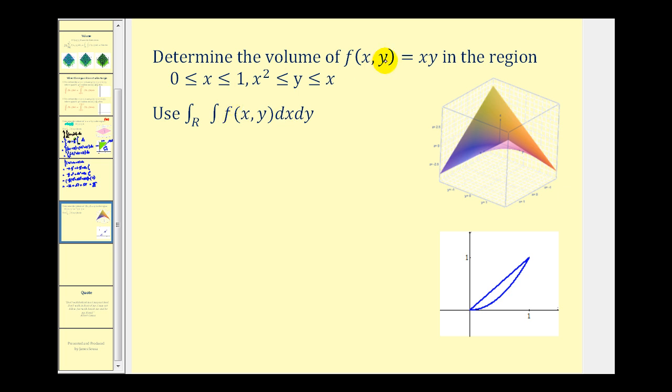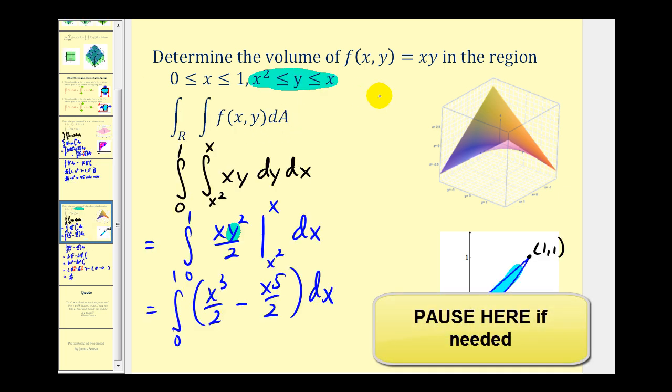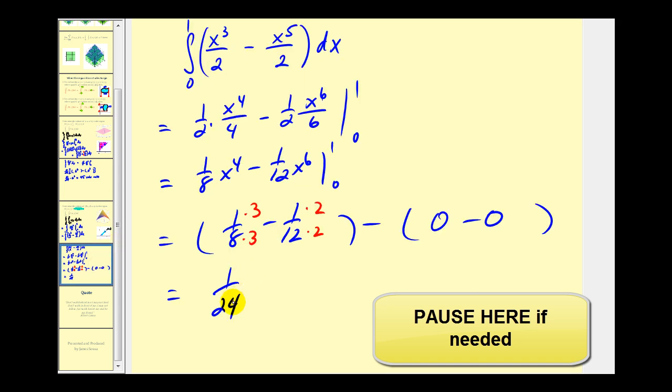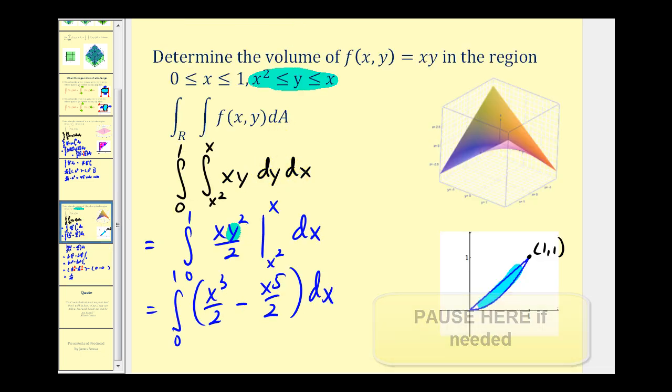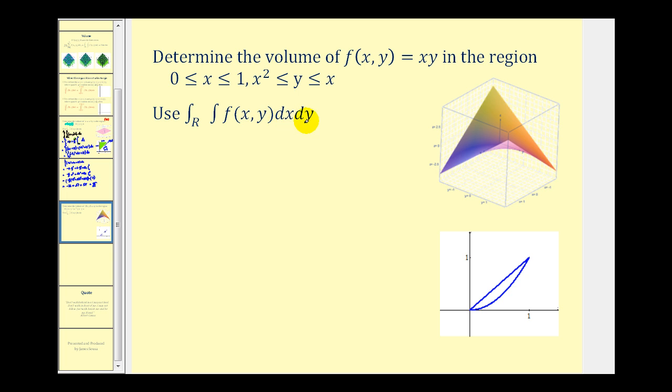Here we want to determine the volume under the surface defined by this region and we want to integrate with respect to x first and then y. Let's go back to our previous presentation to see what the answer is when we integrate with respect to y and then x. Here's the same problem where we had dy dx and now we want the order to be dx dy.